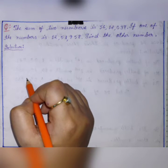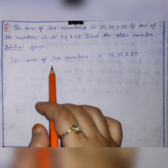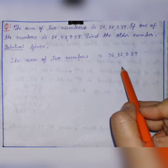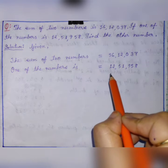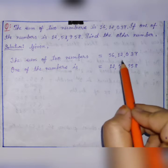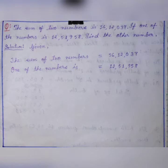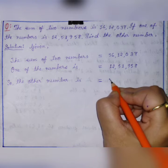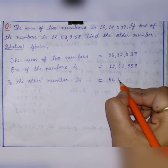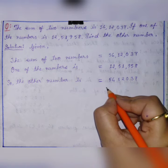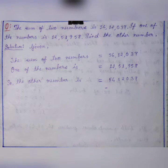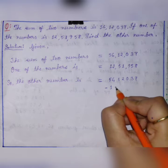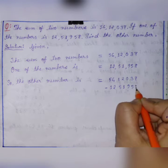First, write what you are given. The sum of two numbers is 56,12,037, and one of the numbers is 12,51,958. Next, we have to find out the other number. The other number is found by subtracting the given number from the sum: 56,12,037 minus 12,51,958.